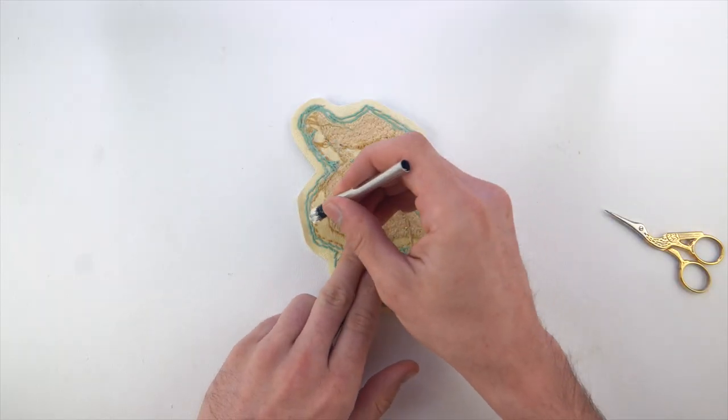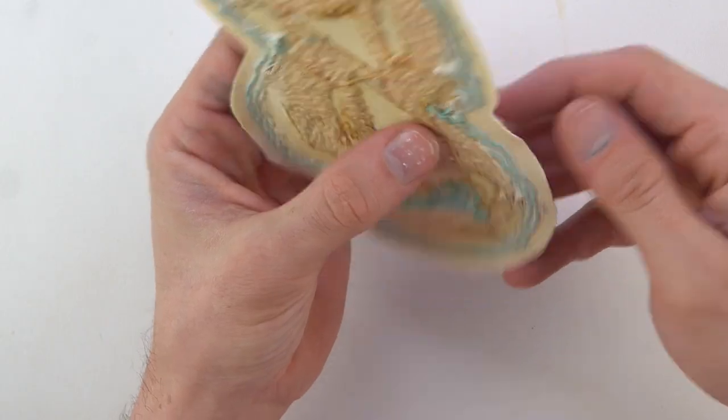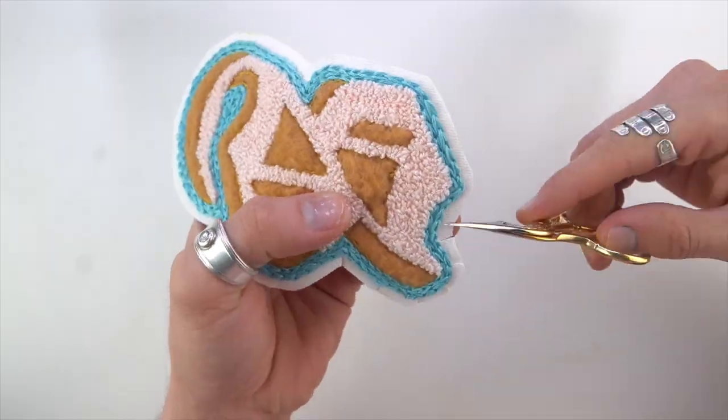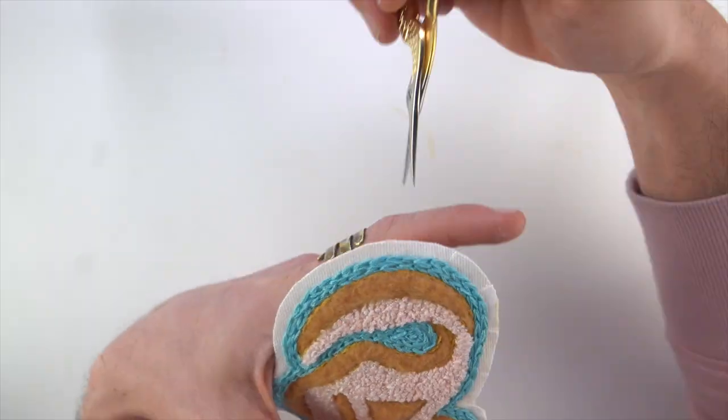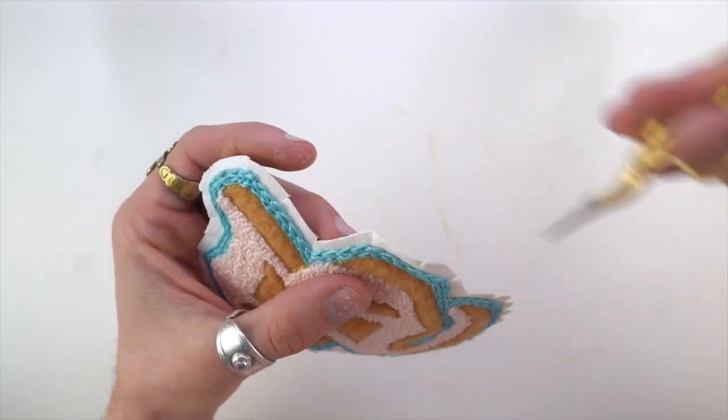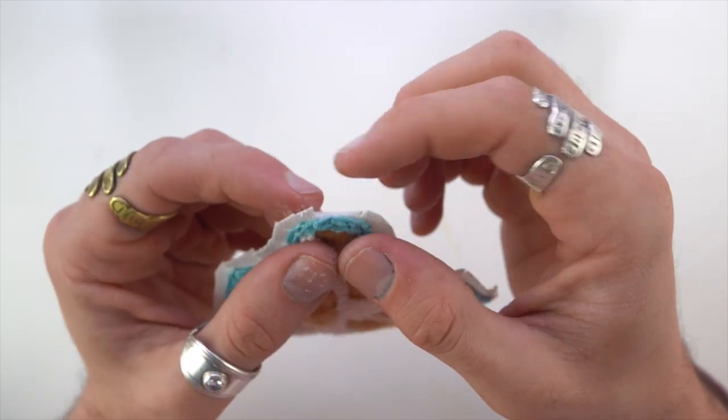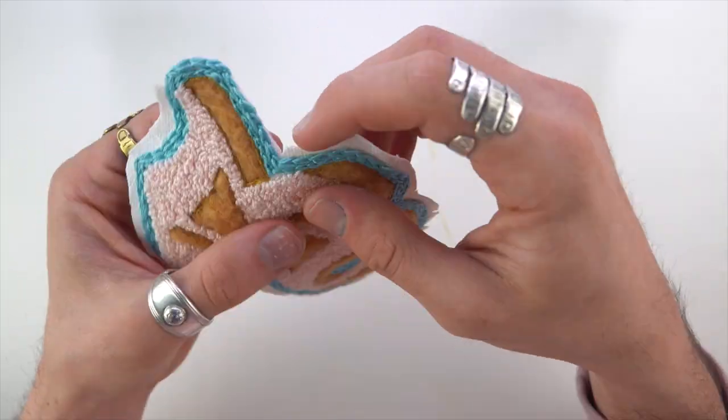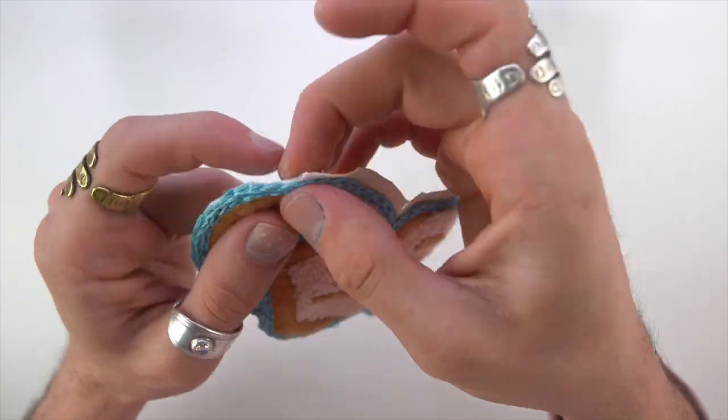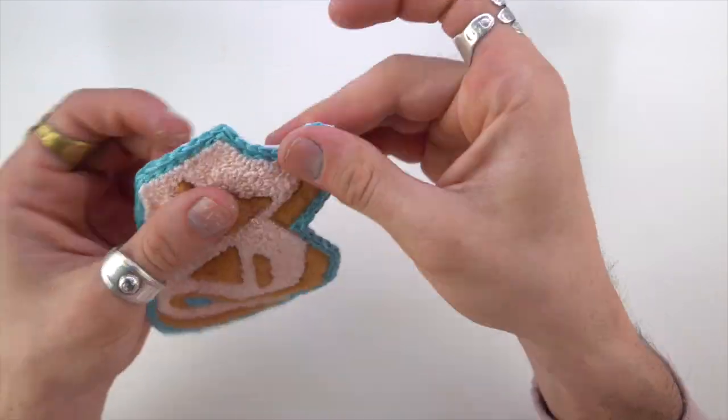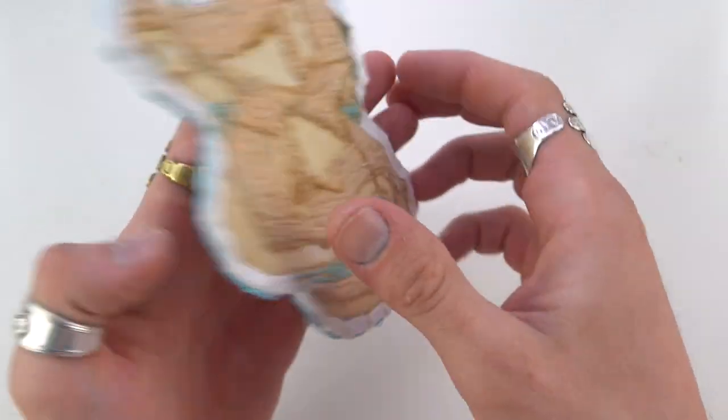And so I cut it out leaving probably like a half an inch. And we're going to fold that onto itself into the back so it's not seen. So I added some more rug glue. And then cut these little snips all around the border. That way I could just fold them over. And they would stick to itself. The fresh rug glue. And it would hold in place.